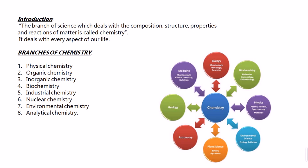First, let's explain what science is. Science is the subject that gives us knowledge to understand things in this world — it clarifies the composition, structure, properties, and more. Science is divided into branches: chemistry, biology, physics, and many others. Our concern is only with chemistry, which is like the root of a tree with many branches.